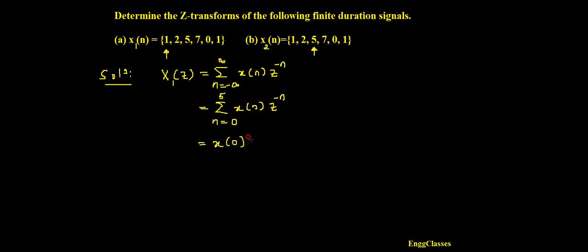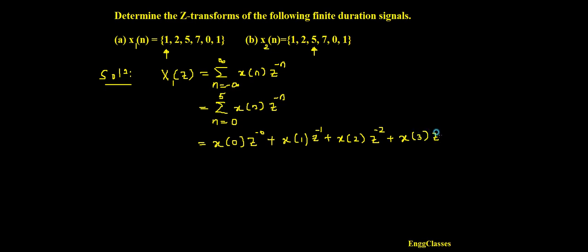Putting n equals 0 gives x(0) z to the power 0. Then n equals 1 gives x(1) z to the power minus 1, plus n equals 2 gives x(2) z to the power minus 2, plus n equals 3 gives x(3) z to the power minus 3, plus n equals 4 gives x(4) z to the power minus 4, and lastly n equals 5 gives x(5) z to the power minus 5.